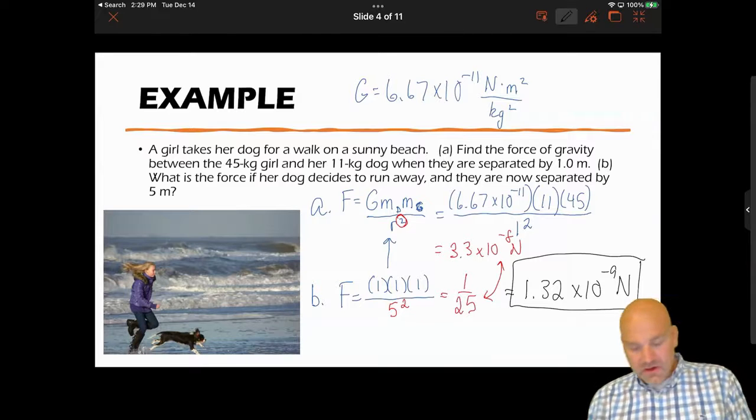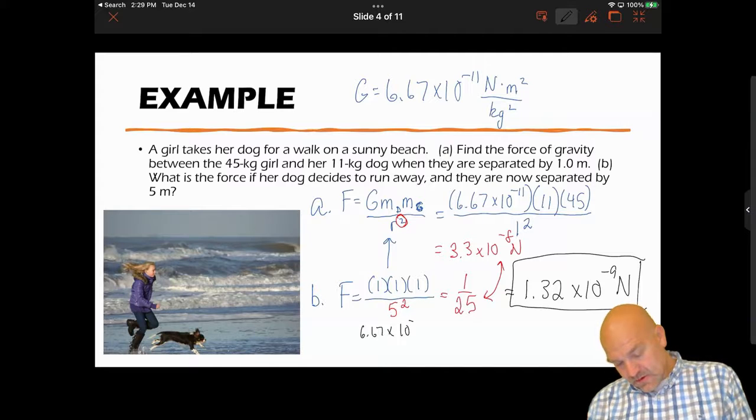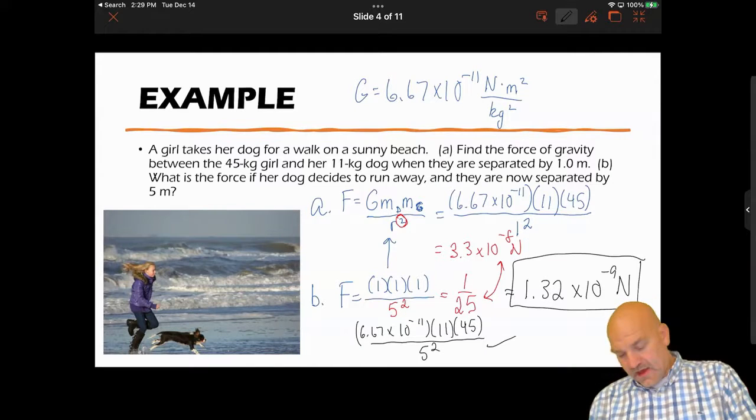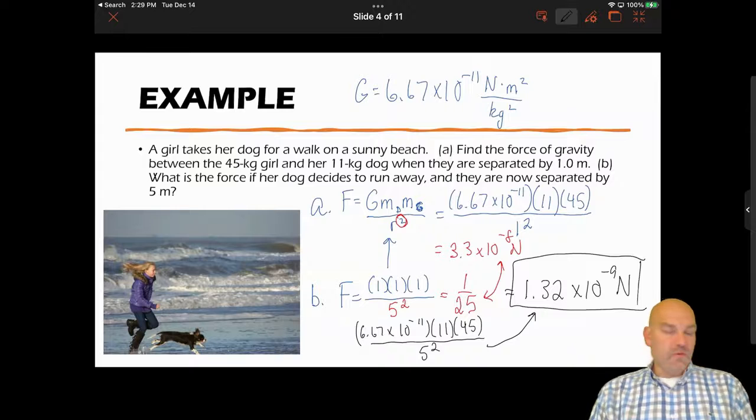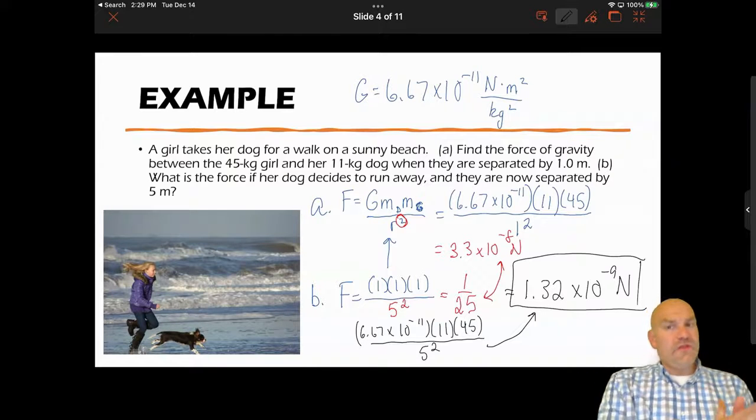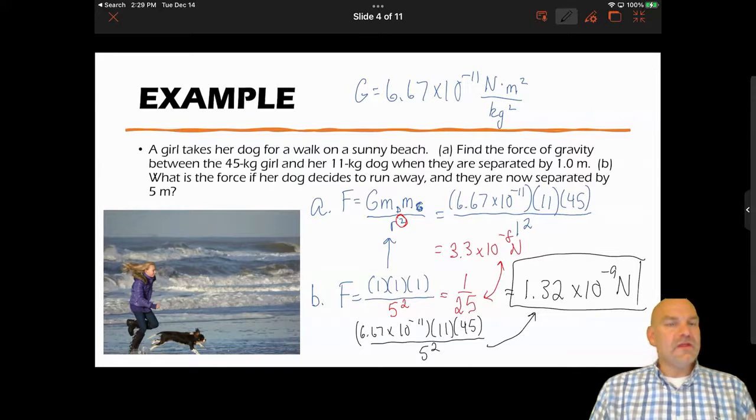Something else that you can do: you can just, I mean we did the factors of change method, you can also just simply plug in your numbers. The numerator stays the same, but the bottom becomes five squared. And that's what you would get, that 1.32 times 10 to the negative ninth. So this really ends the gravitation part of this unit. The next thing we're going to focus on is centripetal acceleration.